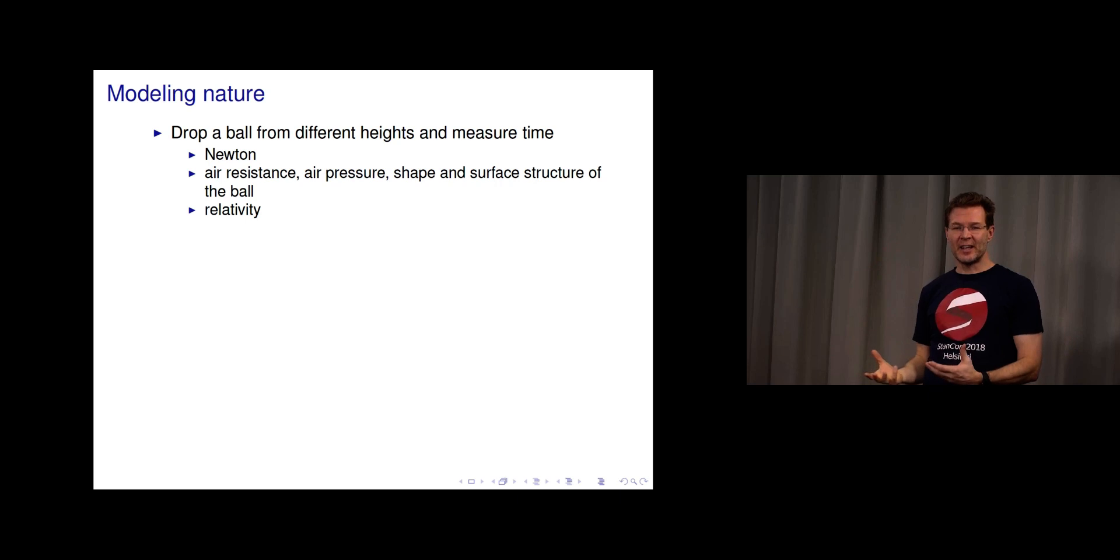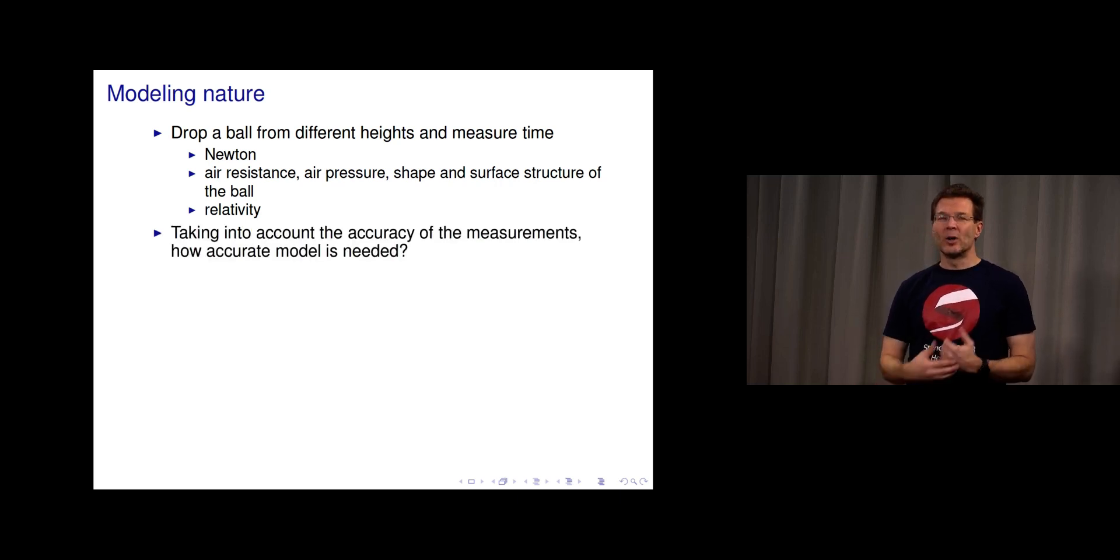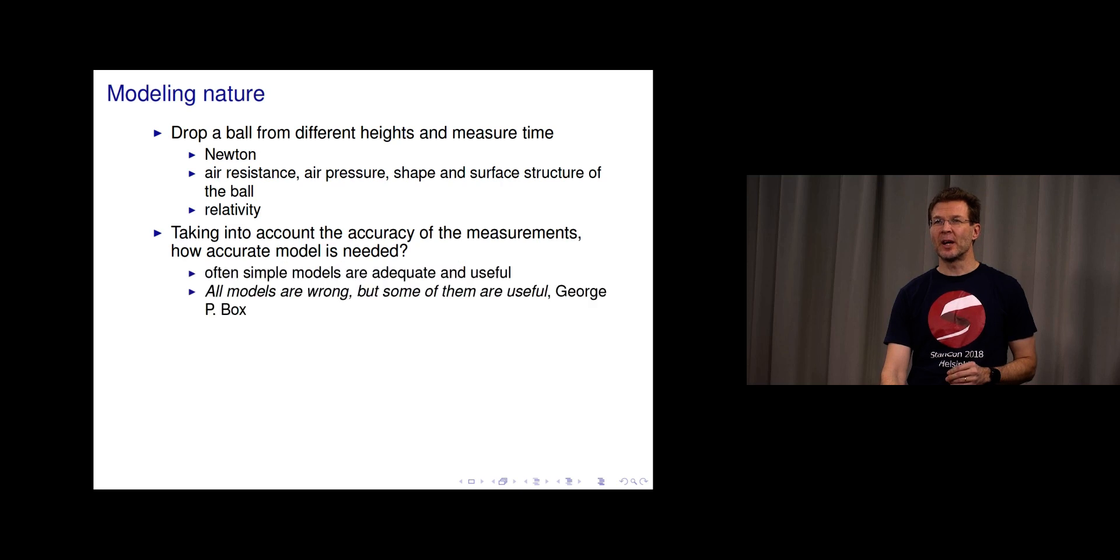But we don't need to take into account relativity if we're dropping balls just in this room. We know that relativity is actually a more accurate model, but if we're measuring these times even with a hand stopwatch, it is more complex model than what we need. Taking into account the accuracy of the measurements, how accurate a model is needed, that's why we often manage with quite simple models being able to do something useful.